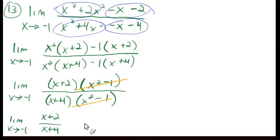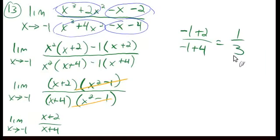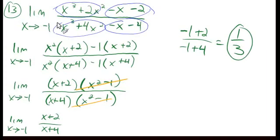Now we can put negative 1 in: negative 1 plus 2 over negative 1 plus 4 gives 1 over 3. That's our limit — the limit as x approaches negative 1 of this big expression is 1 over 3.